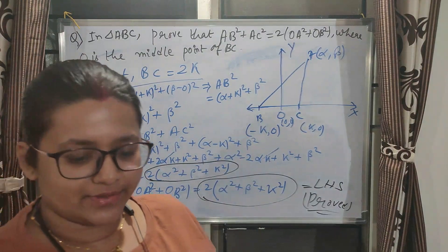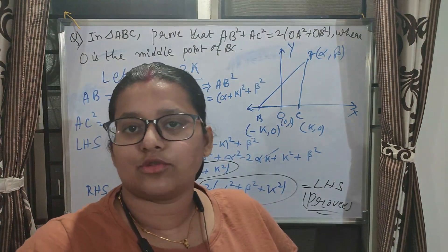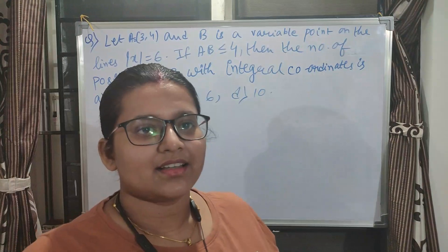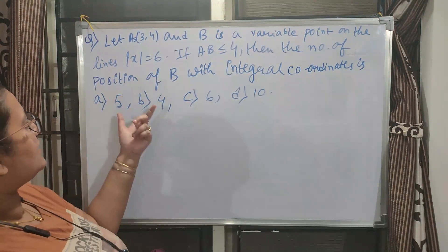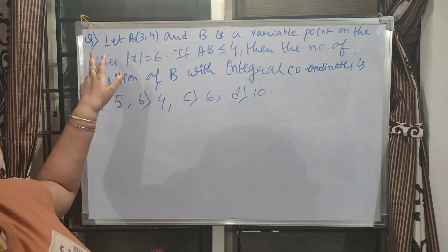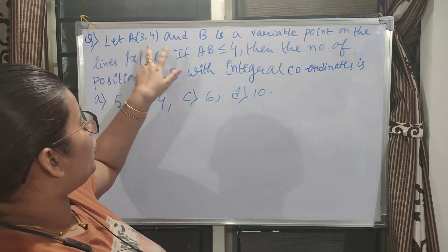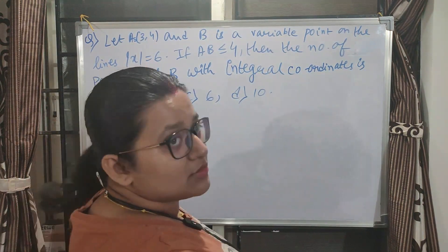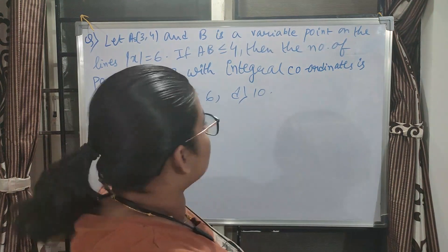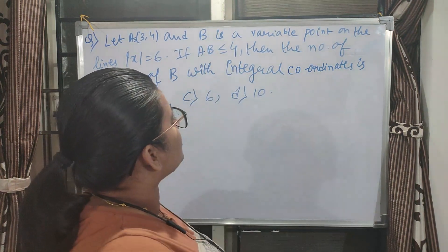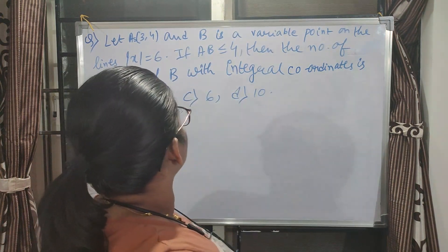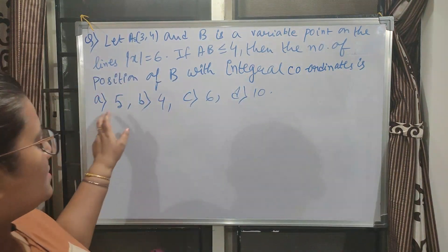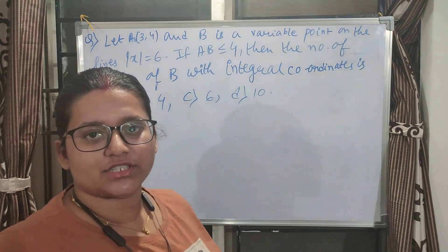I hope that's clear for everyone. Let's do one more problem. The question is: let A = (3, 4) and B be a variable point on the line |x| = 6. If AB ≤ 4, find the number of positions of B with integral coordinates.